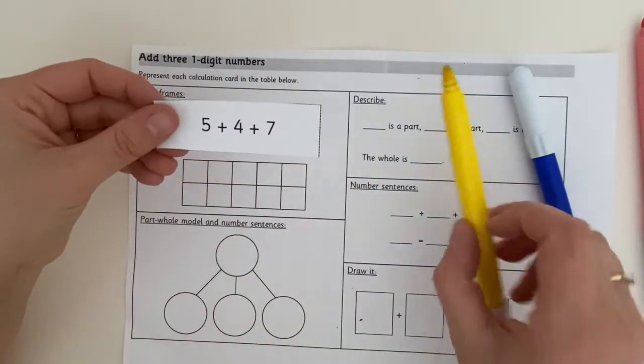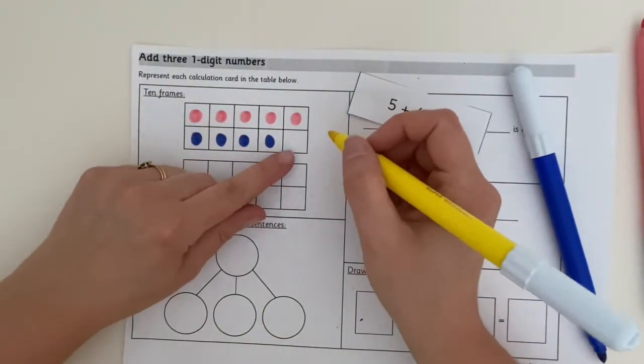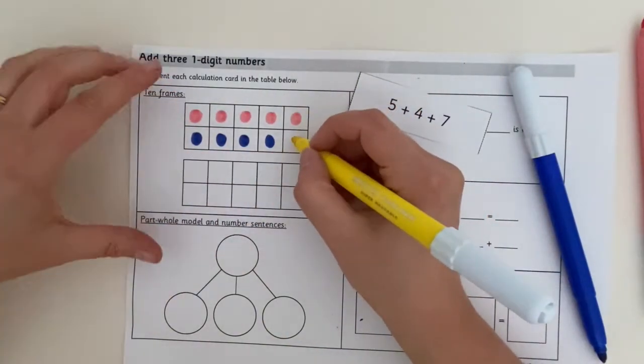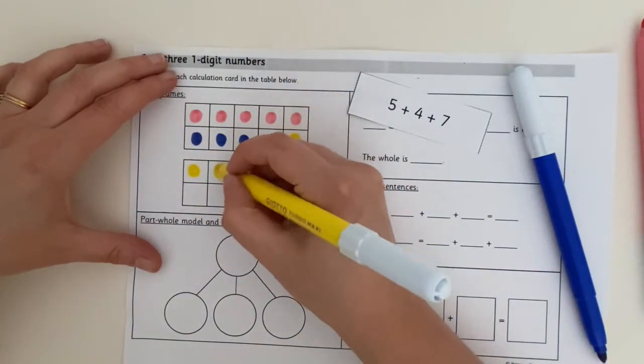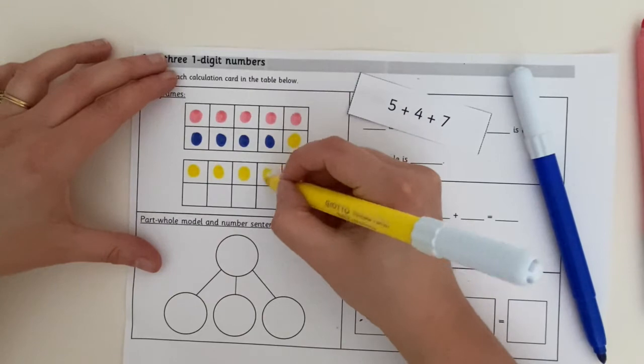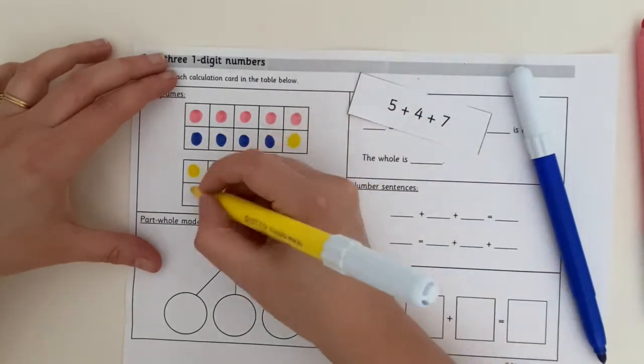Now I'm going to do my seven. I'm going to use the yellow for that. Now I've only got one more space here, so I'm going to use that one. One, two, three, four, five, six, seven.